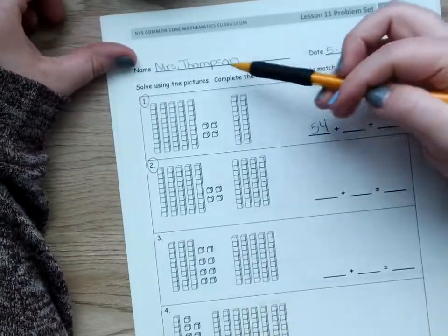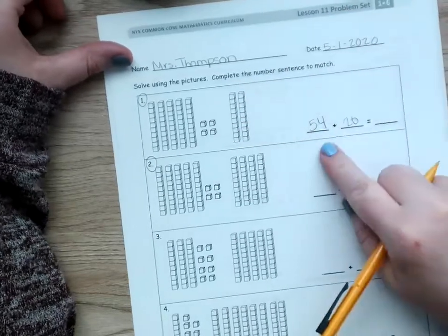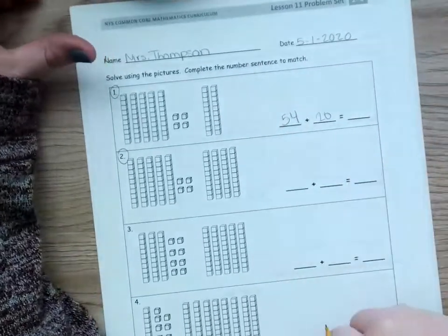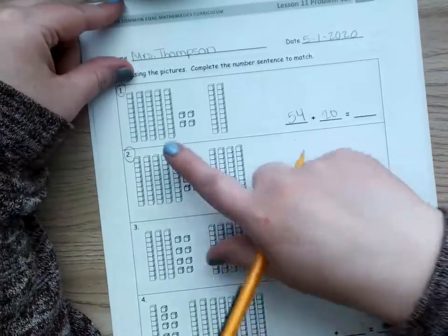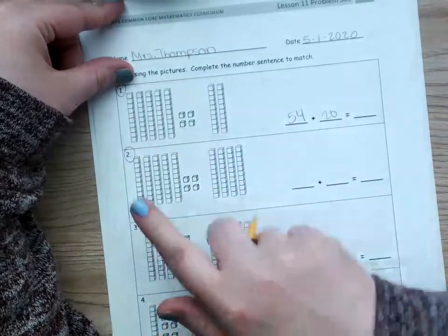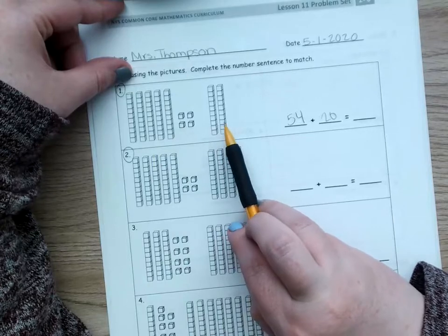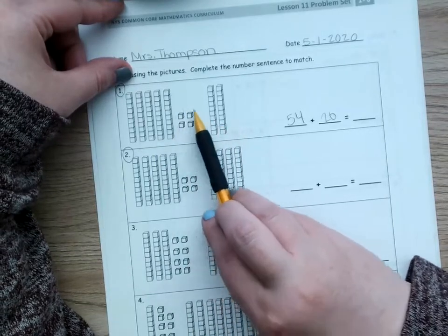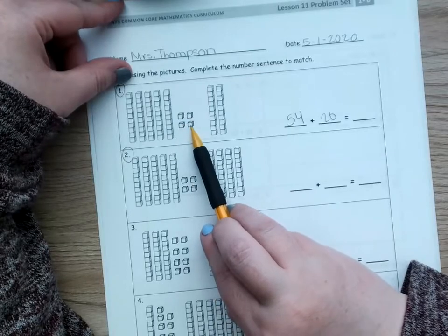The second group here is 10, 20. Fill that in. Now, my job is to add them up. For this one, I think it would be the easiest to just count up the pieces here. So, I've got 10, 20, 30, 40, 50, 60, 70. Now, I'm going to go back and count the ones. 71, 72, 73, 74.